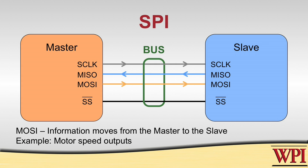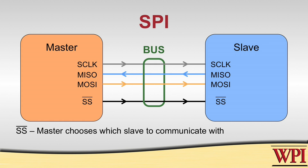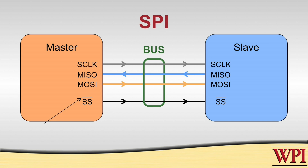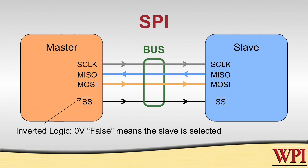The MOSI line is exactly the opposite — data is flowing from the master, or the output side, to the slave, the input side. The last line, the slave select line, is used when there are multiple slave devices. Looking at the notation in this figure, we can see that the SS letters have a bar over them. This is electrical engineering notation for inverted. The slave select line uses inverted logic, so to select a particular slave device, you need to take that slave select line low, or false. That's why the bar is written over the name of the signal line, SS, to indicate it uses inverted logic.